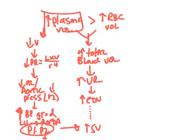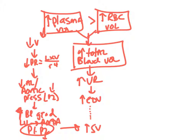So two more of your 11 factors — plasma volume and red blood cell volume — come off the top. Together they increase total blood volume, which affects stroke volume. Additionally, the increase in plasma volume affects viscosity, which also affects stroke volume through a second mechanism.